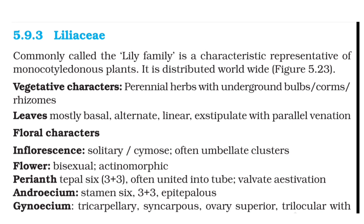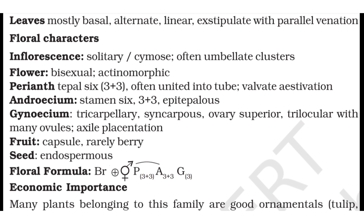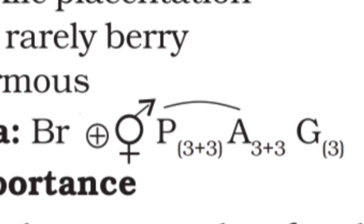Androecium: Stamens are 6 (3+3), and they are epitepalous — 'epi' means upon, so stamens are attached on the tepals. This condition is also known as epiphyllous. If stamens are epipetalous, they are attached on petals; but if attached on tepals, they are epitepalous or epiphyllous. In the floral formula, this condition is represented by drawing an arc from P to A, showing attachment of perianth/tepals to the androecium/stamens.